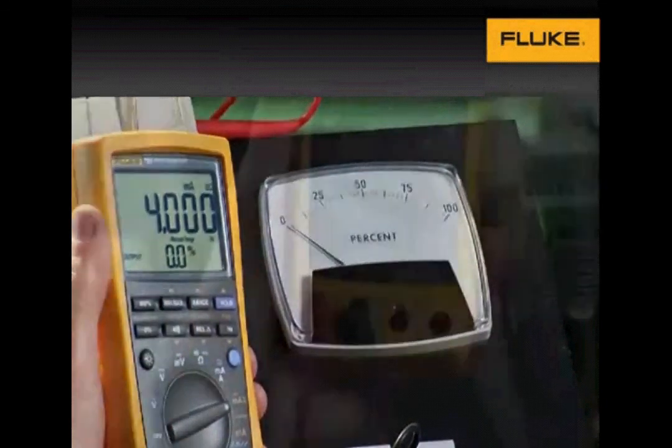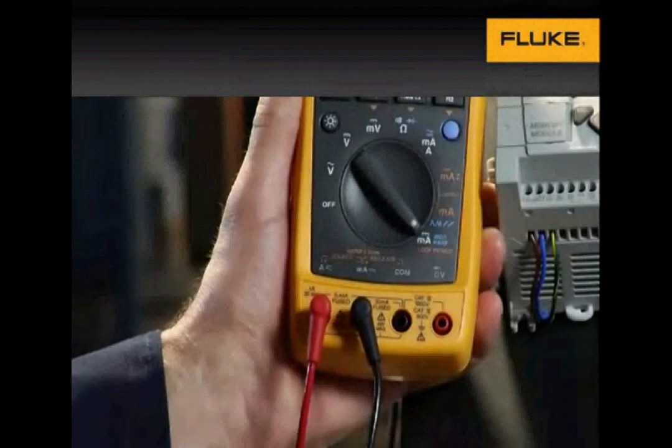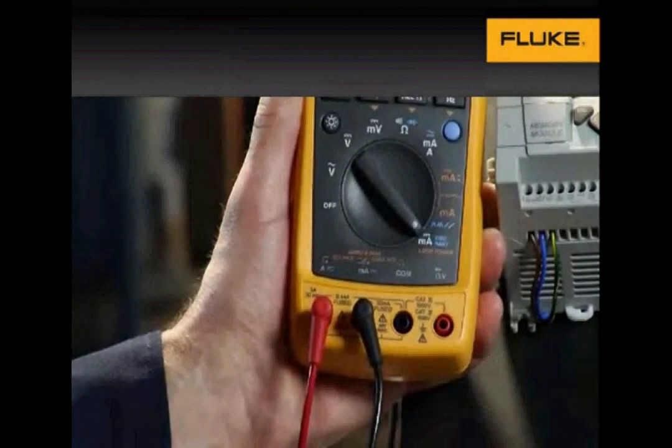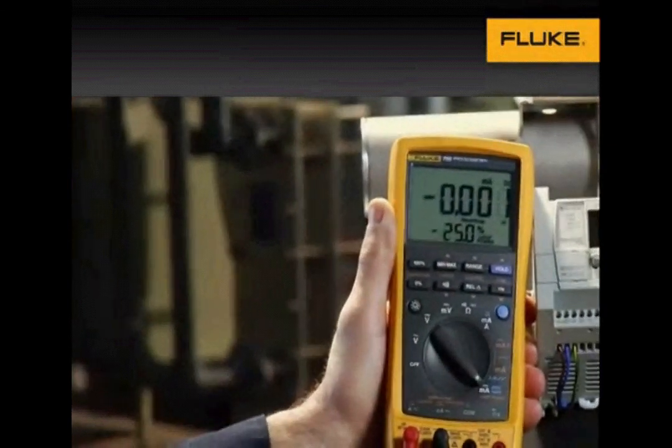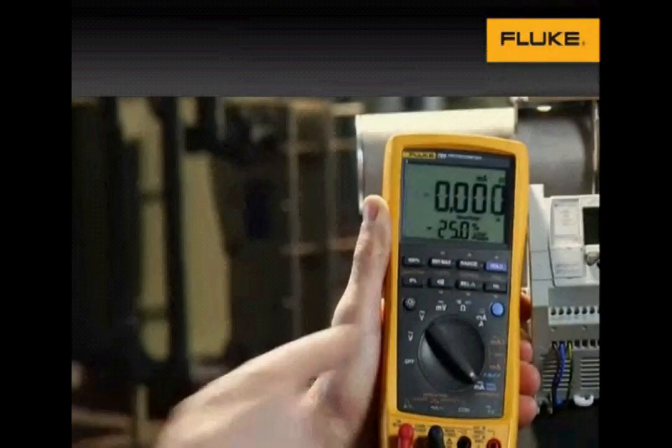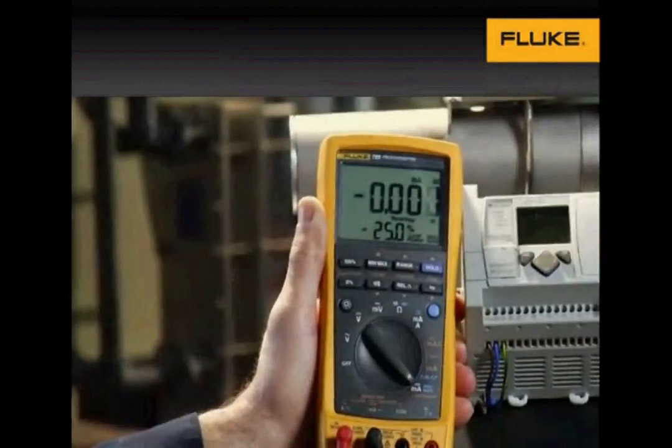The 789 also has a 24-volt loop power supply that will power a transmitter. You can simultaneously measure the milliamp signal drawn against the loop power supply. It also has a 250-ohm HART resistor you can switch in that will permit communication with a HART communicator.